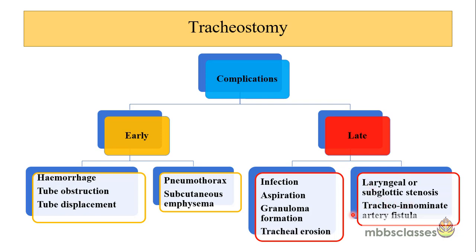The most dreaded complication is erosion of the innominate artery — tracheo-innominate artery fistula — which is rare. Risk factors include low tracheostomy, where the tube tip may erode the innominate artery, infection, and high-pressure cuffed tubes.